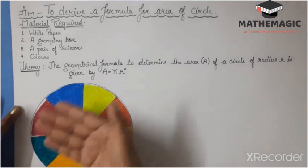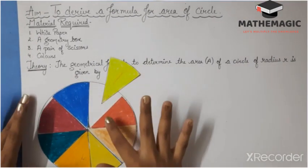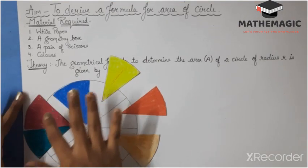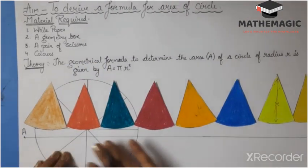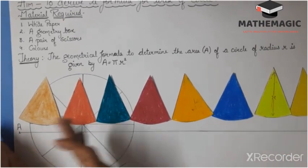Step 3: Shade all the parts in different colors and then cut out all the 8 parts of the circle. After cutting all the parts, here I have placed them on a white paper.